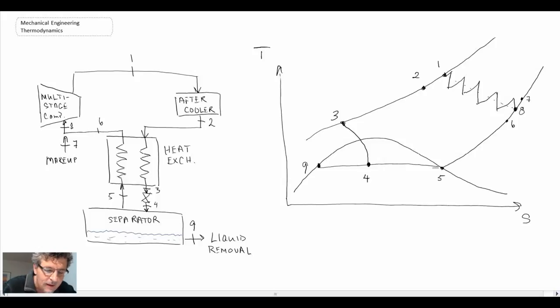But going through this process, what we do is we have multi-stage compression. So at multi-stage compression, we begin at state eight, as shown here. And we go through compression cooling, compression cooling, compression cooling. We do that multiple times, and we come out at state one after going through that. And so then, in terms of our schematic, we would be here.